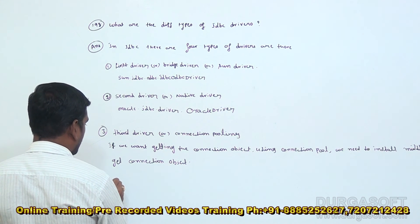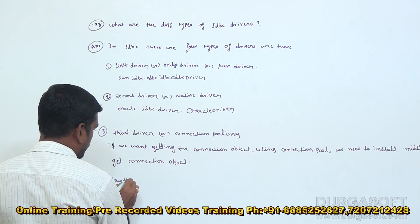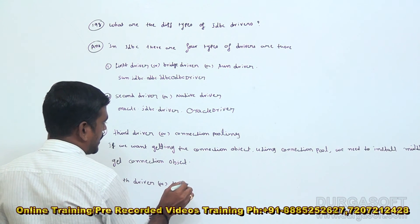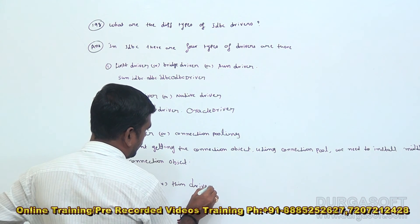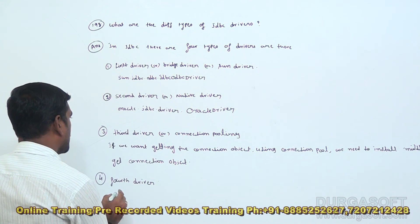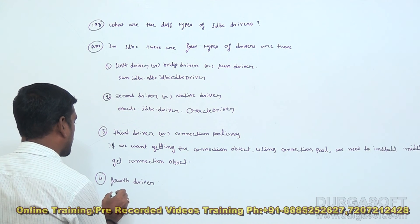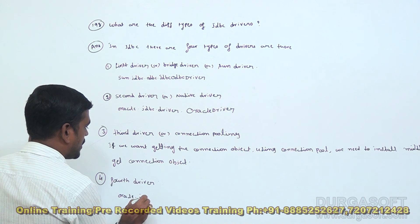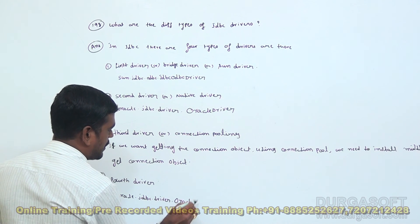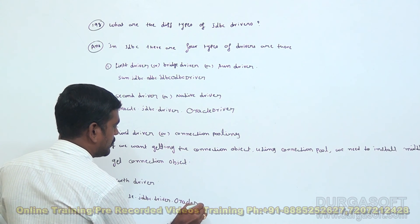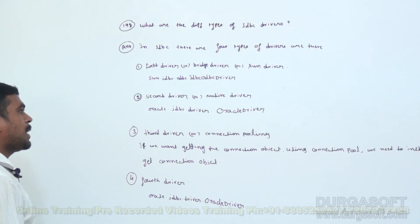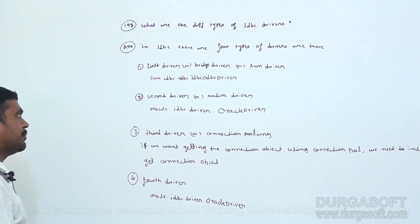The fourth driver is also called as the thin driver. The fourth driver is similar to the second driver. We can use: oracle.jdbc.driver.OracleDriver. These are the types of driver classes available in JDBC.